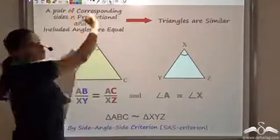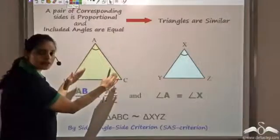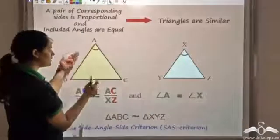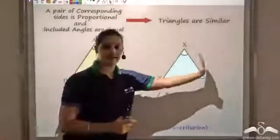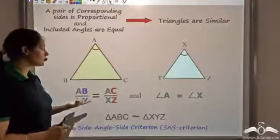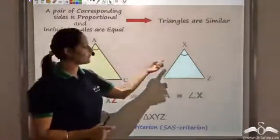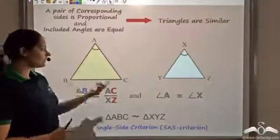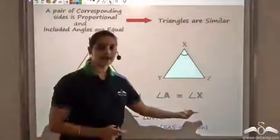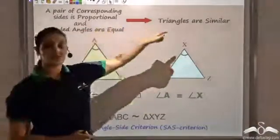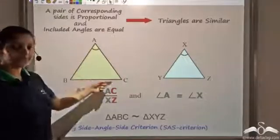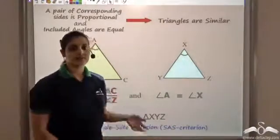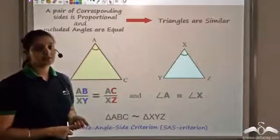A combination of the two also works. If you have a pair of corresponding sides proportional — say AB/XY = AC/XZ — and the included angle between those sides is equal, meaning angle A equals angle X, then it is sufficient to say the triangles are similar. So triangle ABC is similar to triangle XYZ by the Side-Angle-Side criterion. These are the different criteria by which you can show that triangles are similar.